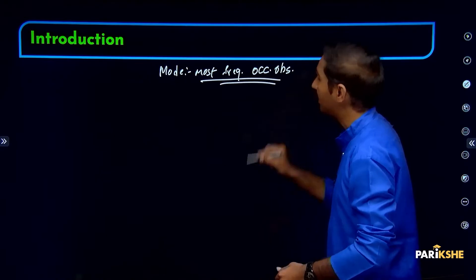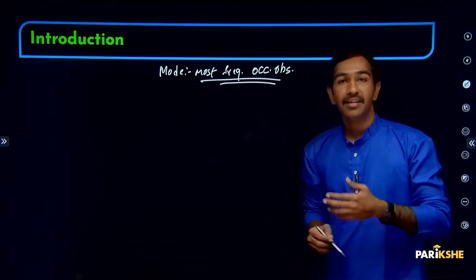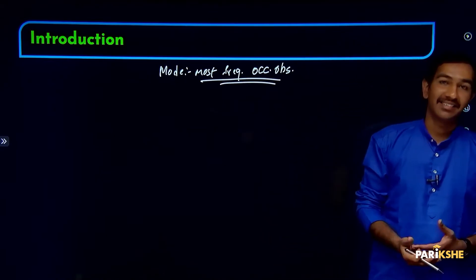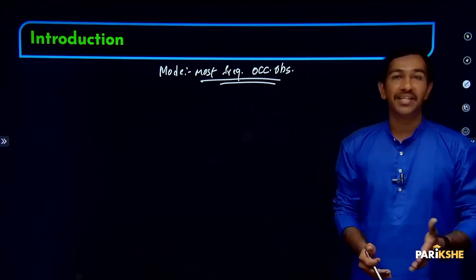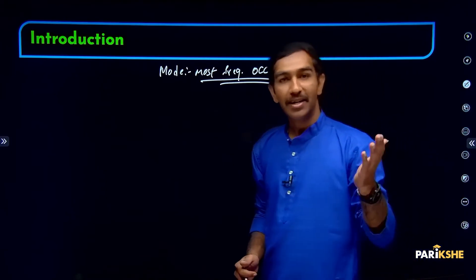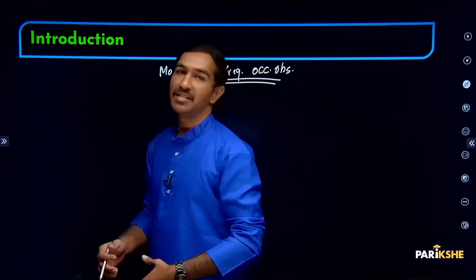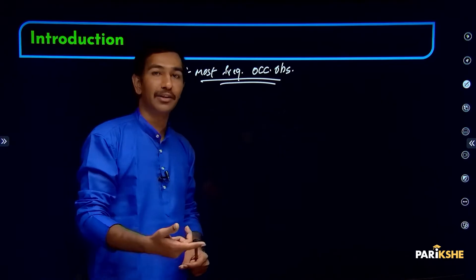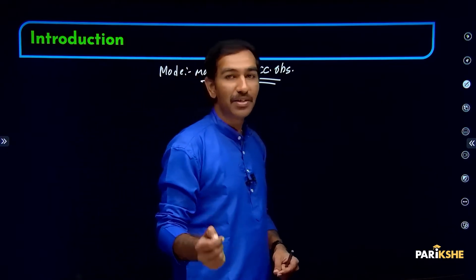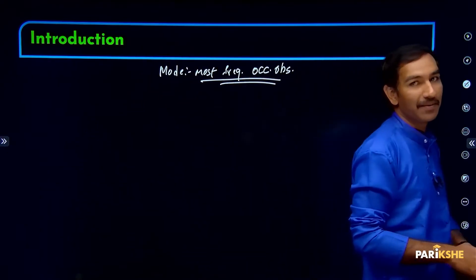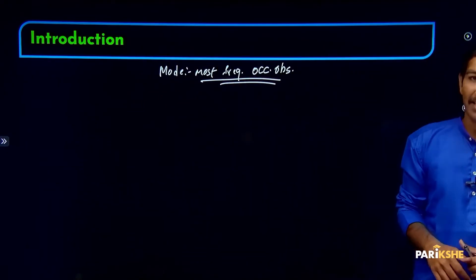Mode anuntdha karithi vi. For ungrouped data, we find mode by looking at the observations given — whichever observation repeats the most, that observation is called mode.